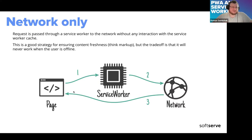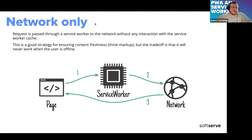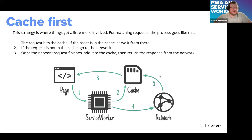Network only is also self-explanatory. When the web application makes a network request, the service worker intercepts it and provides data from the network itself. It's a useful strategy when you want to specify that certain data should not be cached — for example, API keys, hash keys, encrypted data, and so on. With this strategy you tell the service worker not to cache that data; it will always be fetched from the network.